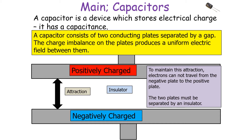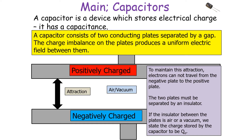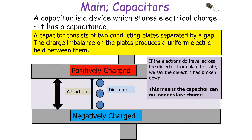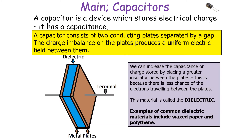As such, the two plates must be separated by an insulator. If the insulator between the plates is air or a vacuum, the charge stored by a capacitor is Q₀, whilst the capacitance will be C₀. We can increase the capacitance or charge stored by placing a greater insulator between the plates, because there's less chance of electrons traveling between the plates. This material we call the dielectric. If electrons do travel across the dielectric from plate to plate, we say the dielectric has broken down, meaning the capacitor can no longer store any charge.